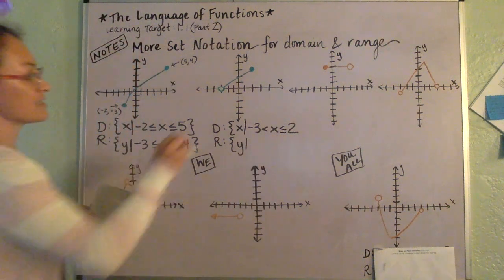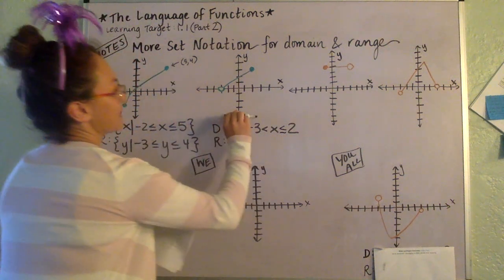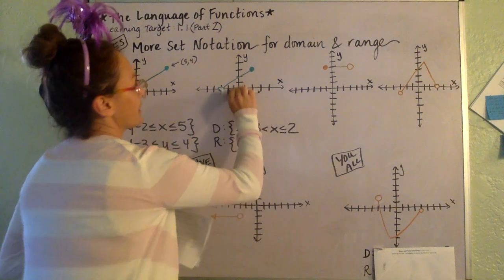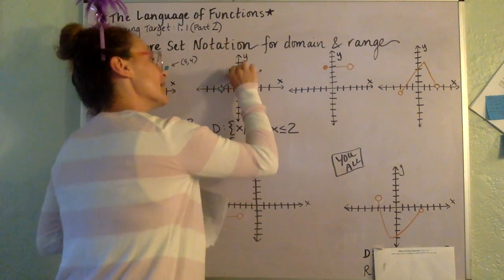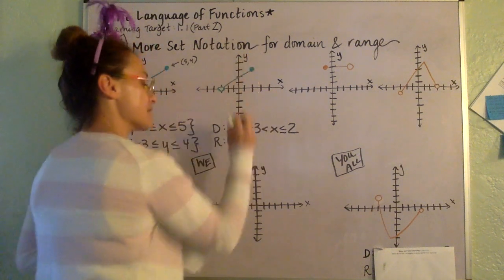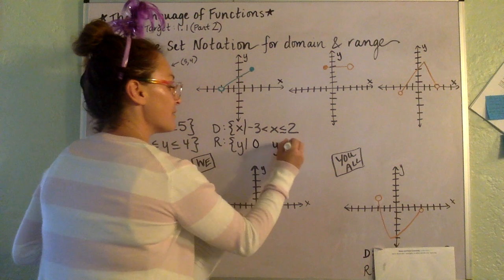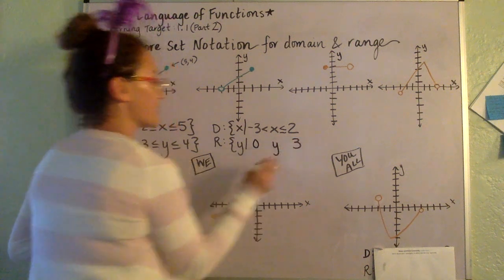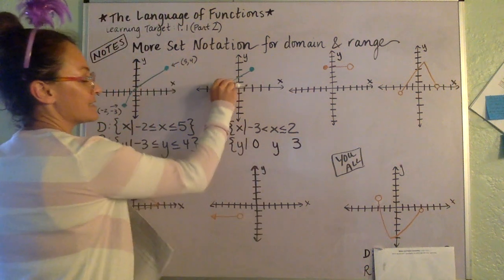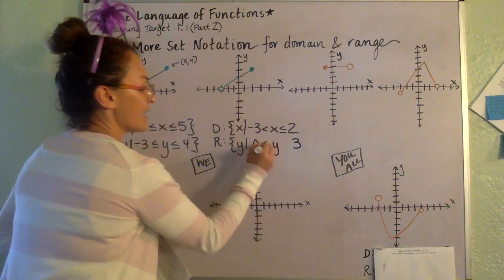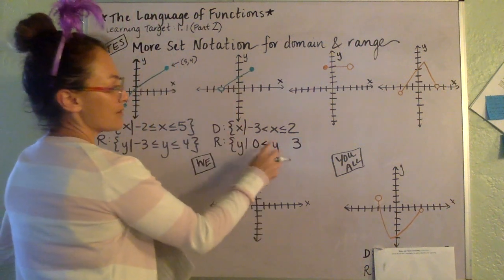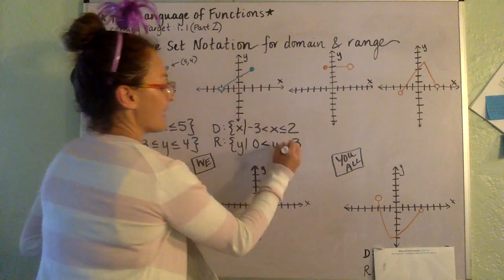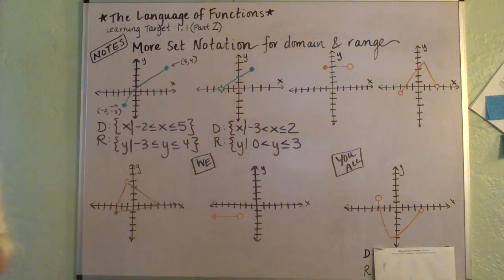And then let's talk about the range. The range is a scan from down to up — from zero up to three. So from zero to three: at zero it's not included, so no equal sign. At three it is included.